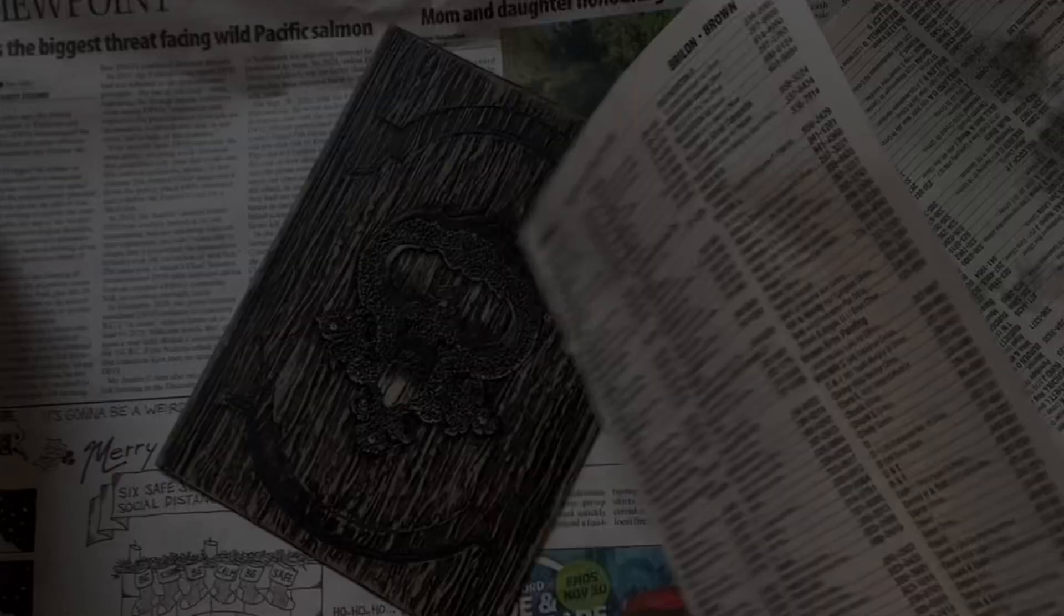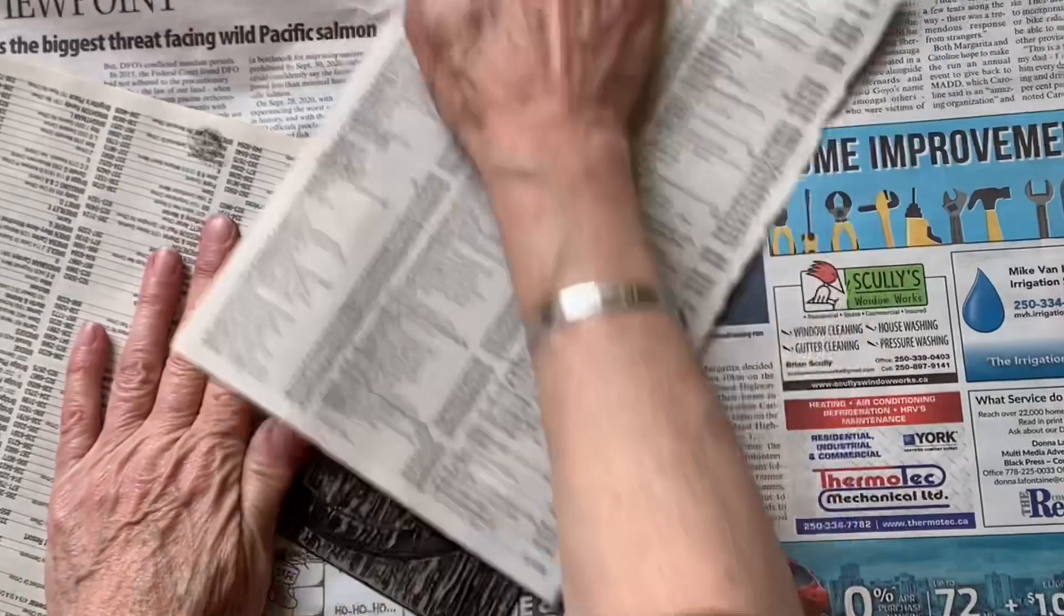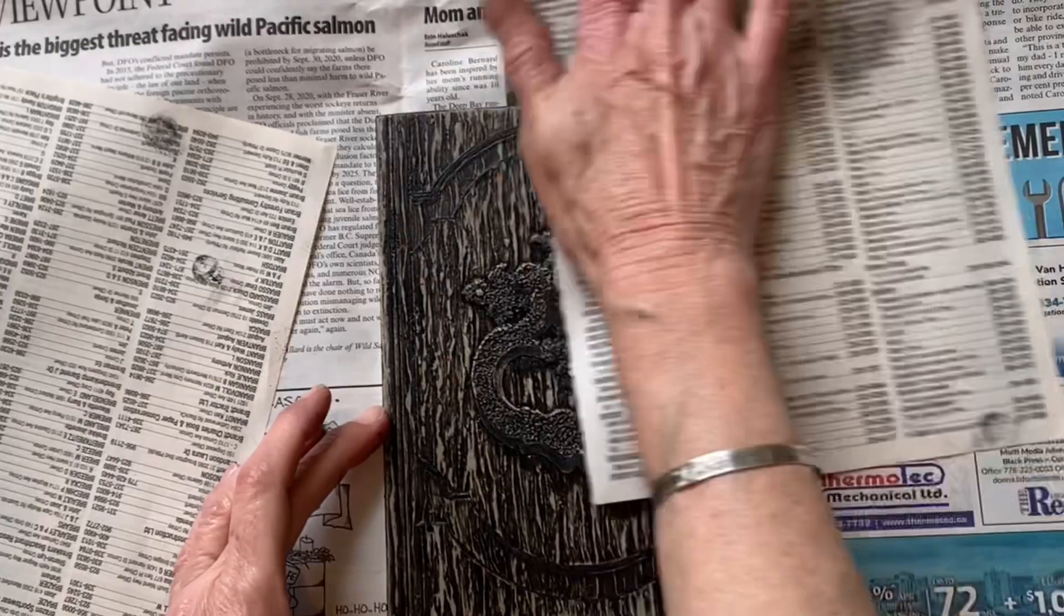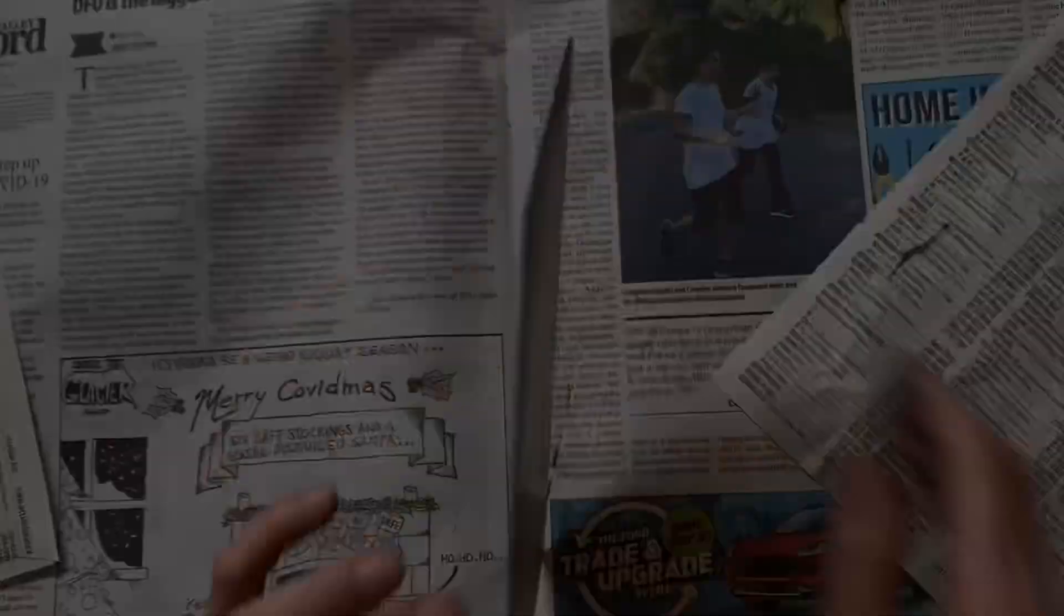And finally, phone book pages are used to remove the surface ink and to clean the edges. And now it's ready to go on the press to be printed.